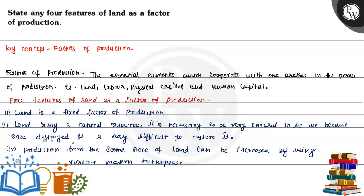Hello bachon, let us see this question: State any four features of land as a factor of production. Land is a factor of production and we have to explain its four features. Now let us see the key concept for this question.